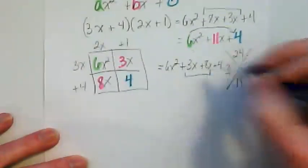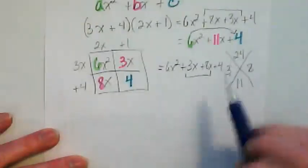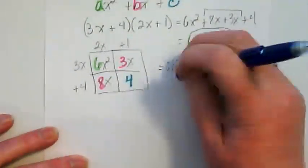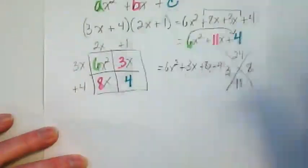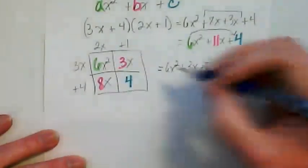6x squared plus 3x plus 8x plus 4. The 6x squared and the 4 I brought straight down here. I'm taking this 11x and it's broken apart here. And I know it from this puzzle. We're going to combine those to double check that we have 11. And we do. But to continue factoring this, we're not going to add them together.